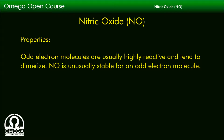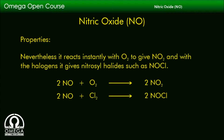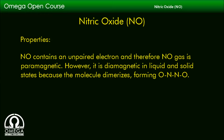Let's look at some of the properties of nitric oxide. Odd-electron molecules are usually highly reactive and tend to dimerize. NO is unusually stable for an odd-electron molecule. Nevertheless, it reacts instantly with oxygen to give NO2, and with halogens it gives nitrosyl halides such as NOCl. The reactions involved are: 2NO + O2 → 2NO2, and 2NO + Cl2 → 2NOCl. NO contains an unpaired electron and therefore NO gas is paramagnetic. However, it is diamagnetic in liquid and solid states because the molecule dimerizes forming the NO dimer.